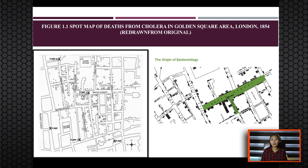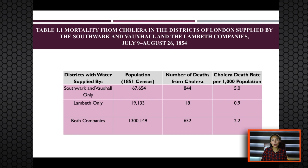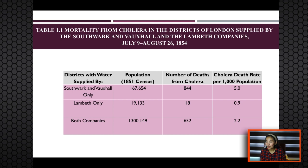Snow conducted a second investigation by re-examining data collected in 1854 from the cholera outbreak in Golden Square, London. He noted that districts with the highest death rates were serviced by two water companies: Southwark and Vauxhall, and Lambert. The death rate of districts served only by Southwark and Vauxhall was more than five times higher than those served only by Lambert Company. The mortality rate in districts supplied by both companies fell between the rates for districts served exclusively by either company.